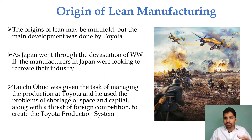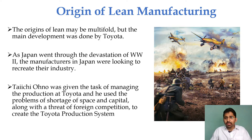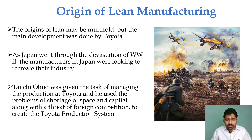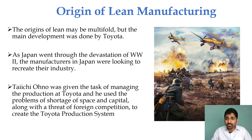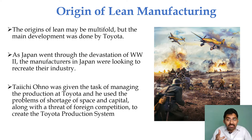As you already know, we faced World War 1 and World War 2. During World War 2, Japan was in trouble. After the war, they needed to re-establish their industries. Taiichi Ohno was given the task of managing production at Toyota. He used the problems of shortage of space and capital, along with the threat of foreign competition, to create the TPS — the Toyota Production System.